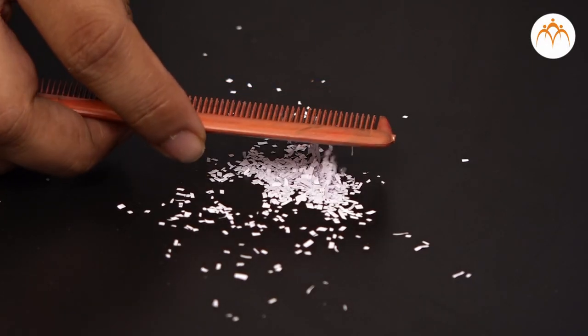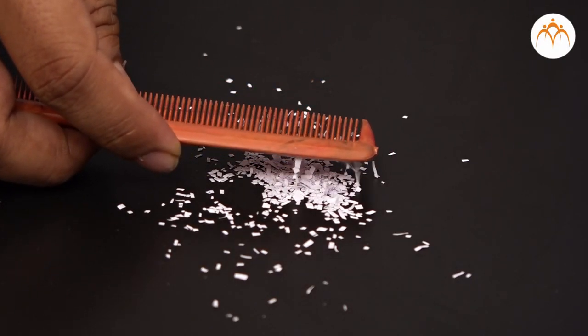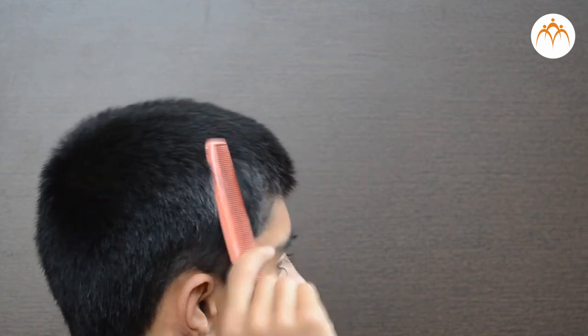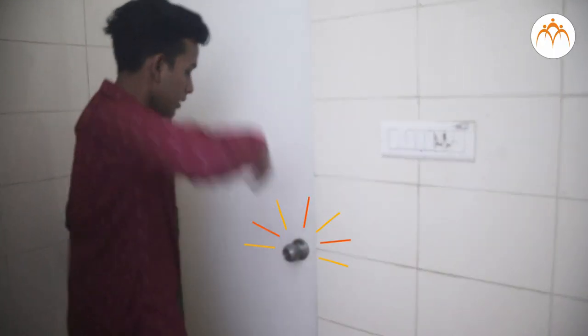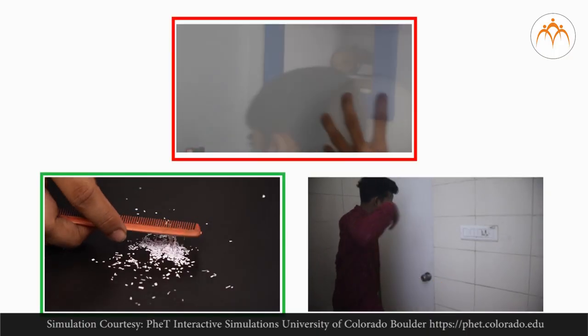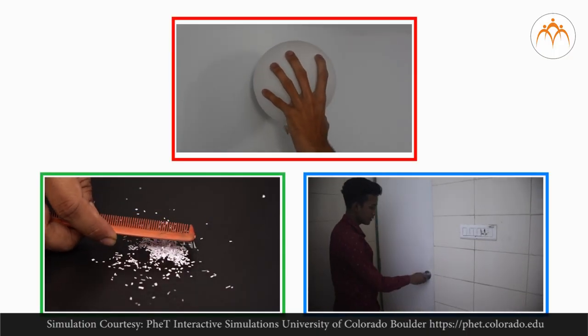You have seen how a comb attracts small pieces of paper after we rub it with our hair. Balloons sticking to walls, sparks from door knobs - all reveal that electric charges are everywhere.